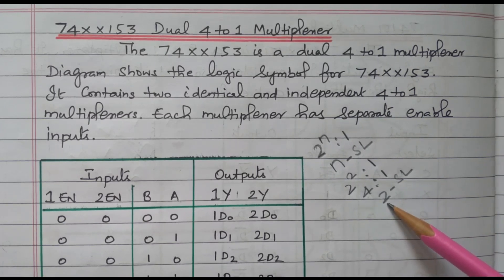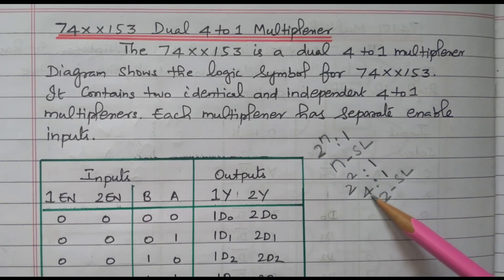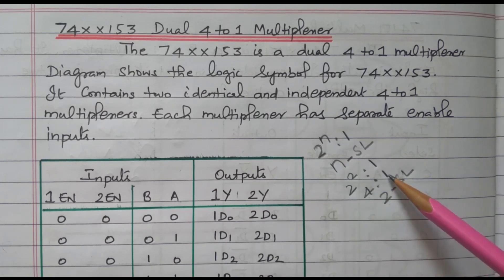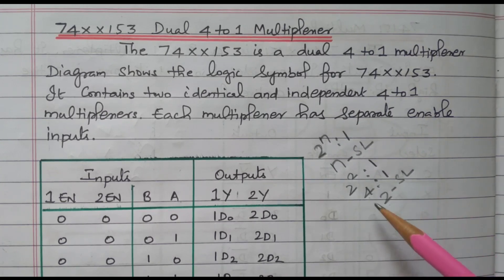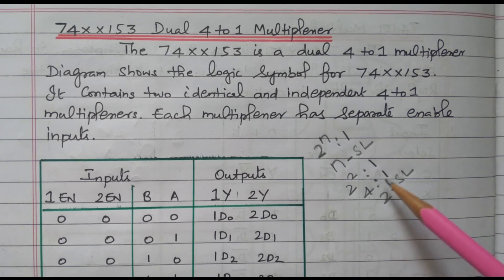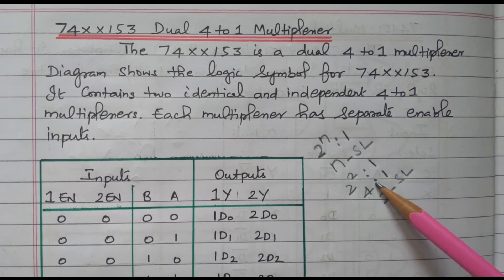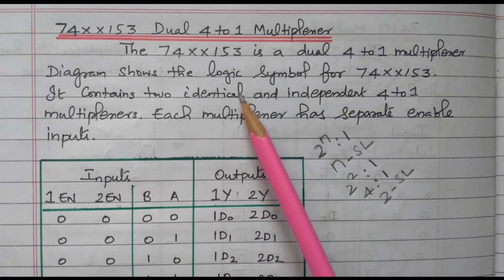These 2 selection lines will decide out of 4 inputs which one should be available at the output. So we have 4 inputs, 1 output, and 2 selection lines. There are 2 sets of data — data 1 and data 2 — because it is a dual 4-to-1 multiplexer.